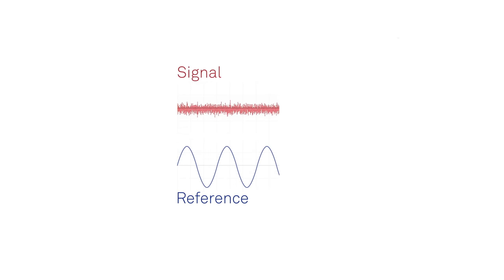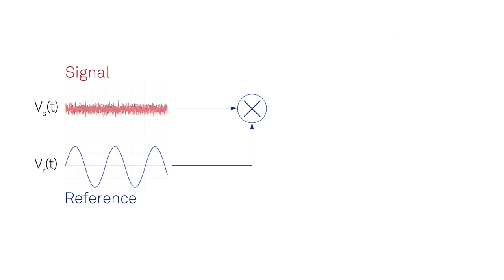The lock-in takes the input signal along with the noise, as well as the reference signal, and puts them through a frequency mixer.